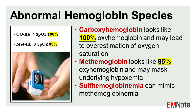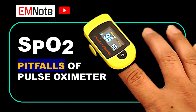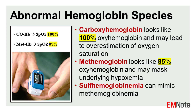The fundamental principle behind pulse oximetry involves the different absorption spectra of oxyhemoglobin and deoxyhemoglobin for red and infrared light. The ratio of these absorption values is used to calculate the oxygen saturation, SpO2. This calculation assumes that only two species of hemoglobin are present — oxyhemoglobin and deoxyhemoglobin. However, in certain clinical situations, other hemoglobin species may be present, leading to inaccurate SpO2 readings.